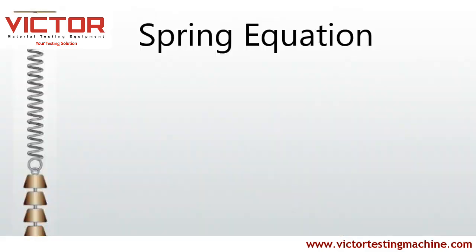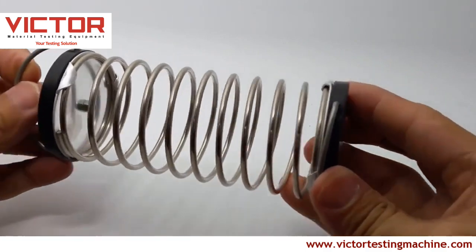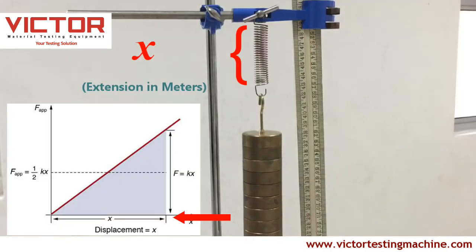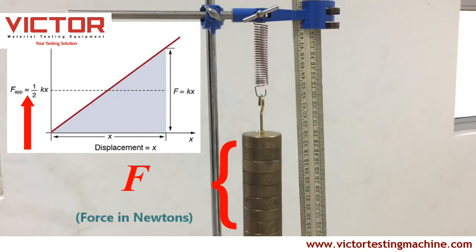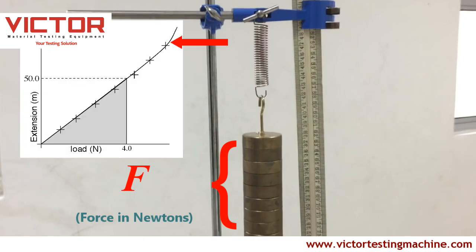Hooke's law is known for the spring equation f = -kx, which relates the force exerted by a spring to the distance it is stretched. x is the displacement in meters of the spring's end from its equilibrium position. f is the restoring force in newtons exerted by the spring on that end.